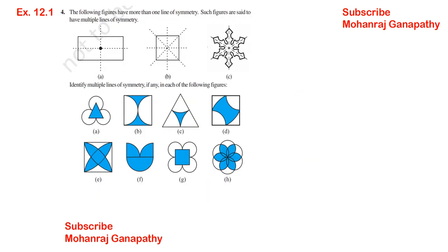X is 12.1, sum number 4. The following figures have more than one line of symmetry. Such figures are said to have multiple lines of symmetry. Identify multiple lines of symmetry, if any, in each of the following figures. Equal, equal, equal — 3 lines of symmetry. Square — half, half, half, half — I cut.